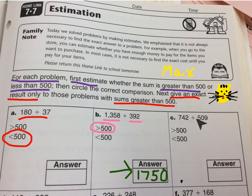Next one. 742 plus 500. Let's say this is about 700, about 500. So that's about 1,200. Of course, both numbers are greater than 500, so I need to circle that. And then I need to give an exact answer.